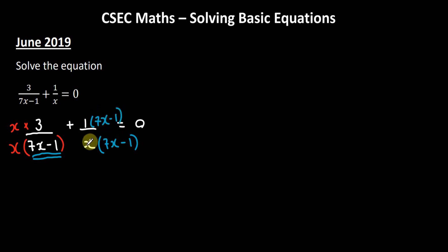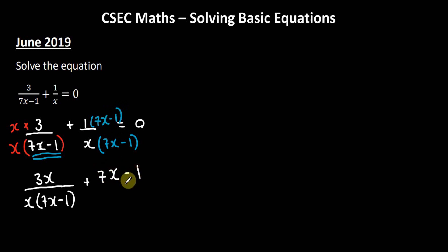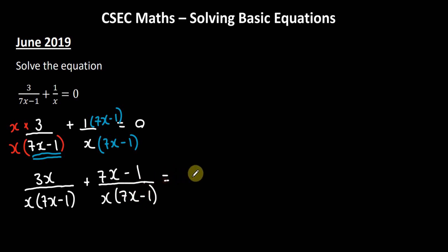After multiplying, we have 3 times x in the numerator, which is 3x, divided by x times (7x minus 1). For the second fraction, 1 times (7x minus 1) remains (7x minus 1), divided by x times (7x minus 1). All of this equals 0.